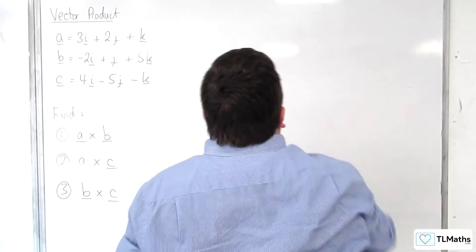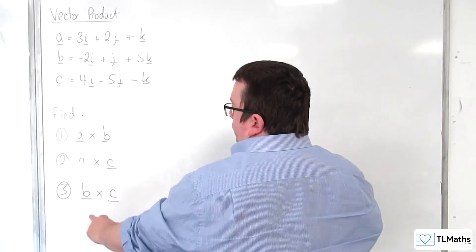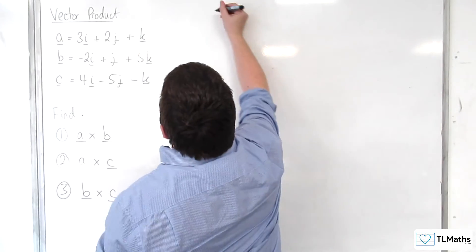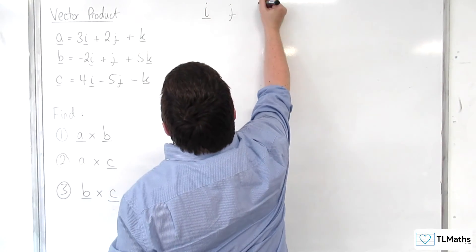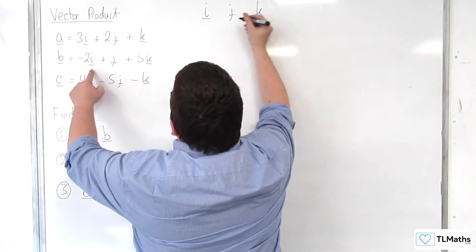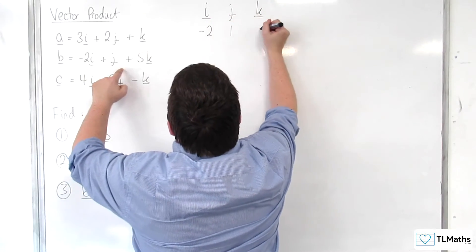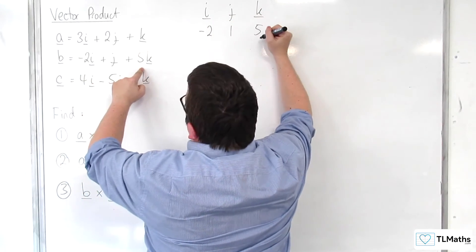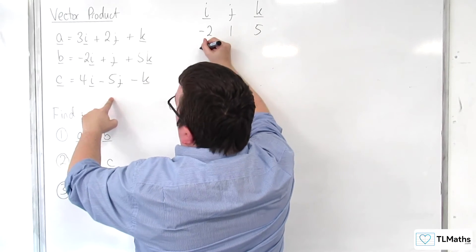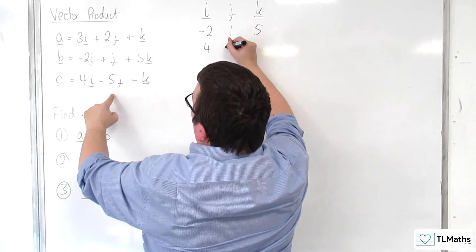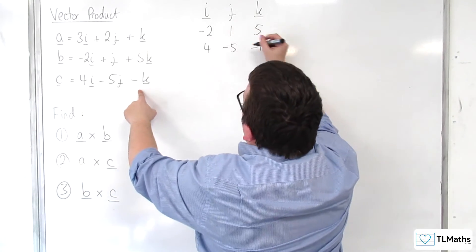So the last one: B cross C. So I, J, K. B is minus 2, 1, 5. C is 4, minus 5, minus 1.